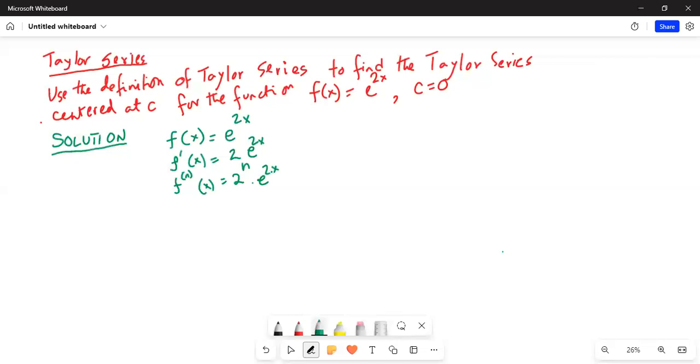So, f'(x), the first derivative, is 2e^(2x). Following the same logic, derivative of f with respect to x, the nth degree derivative is 2^n times e^(2x). So f^(n)(0), when x is 0, is just 2^n.